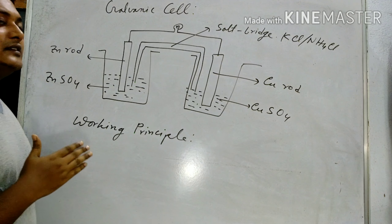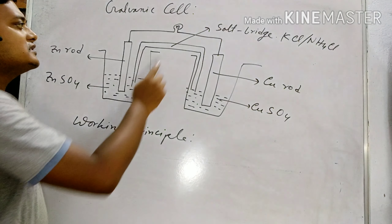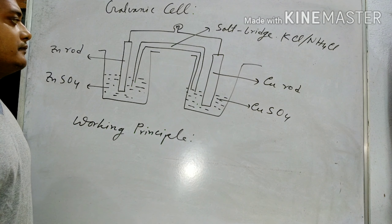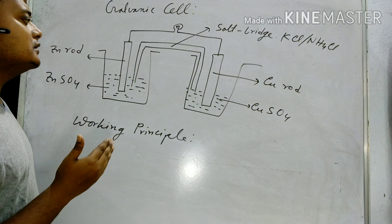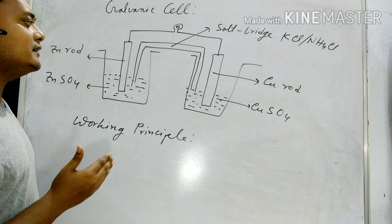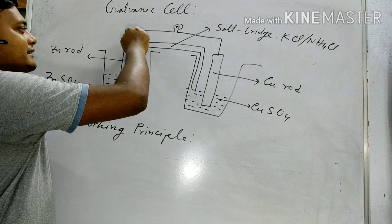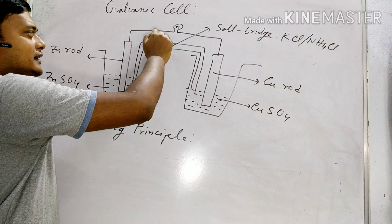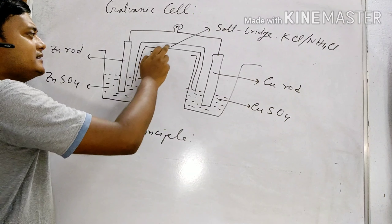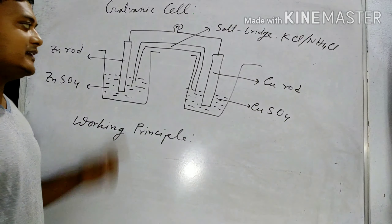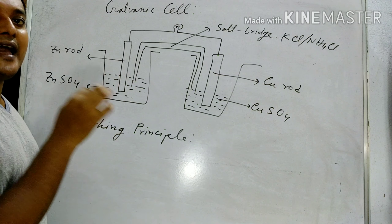That is the working principle of a Galvanic Cell. Next, the function of the salt bridge. The first function is that it allows the flow of current by completing the circuit. Externally, the electrodes are connected by a wire, but internally the two solutions are connected by the salt bridge — a U-shaped tube containing KCl and Ammonium Chloride in Agar-Agar Gel.